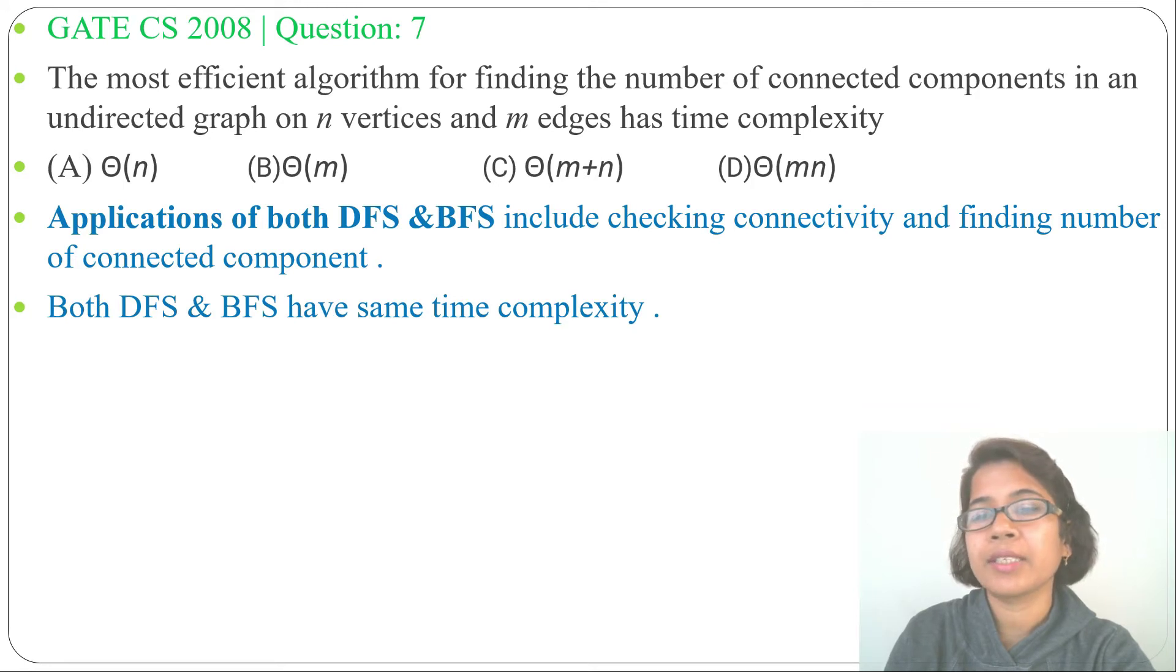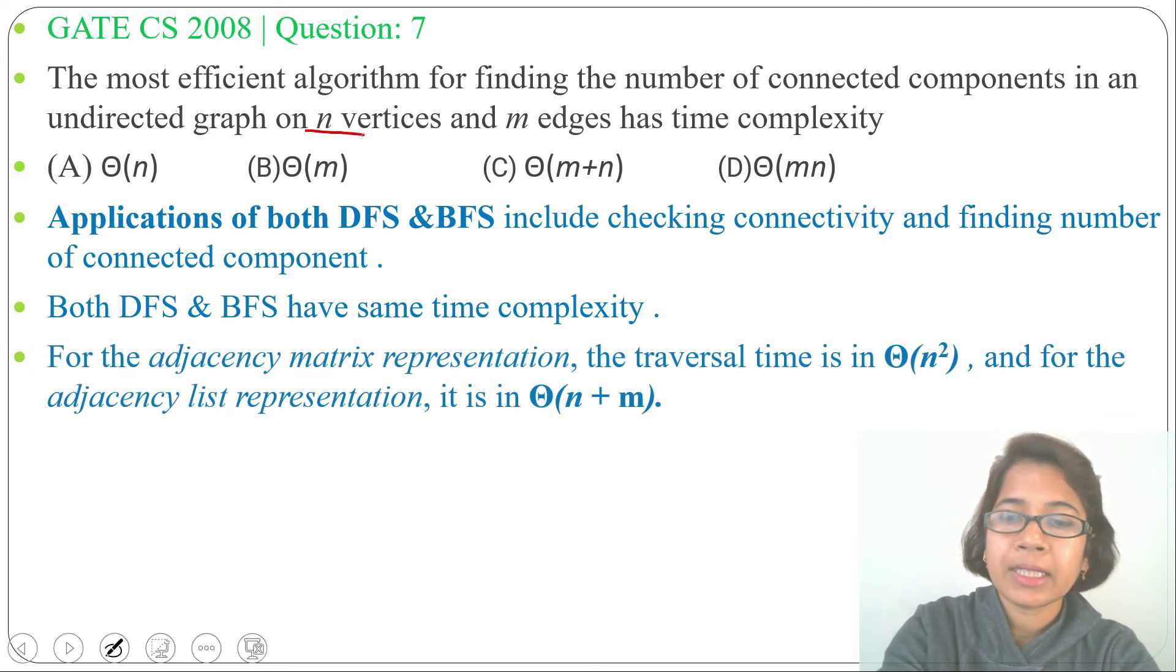If the given graph is in adjacency matrix representation, then for both DFS and BFS, time complexity will be Θ(number of vertices squared). Here number of vertices is n, so it will be Θ(n²).